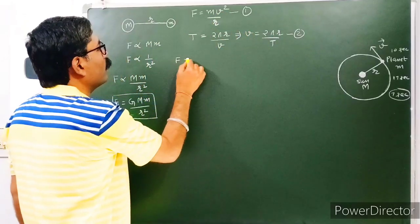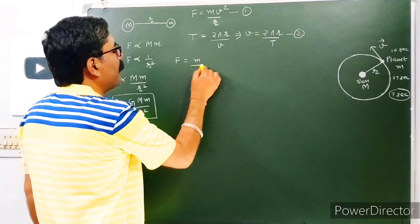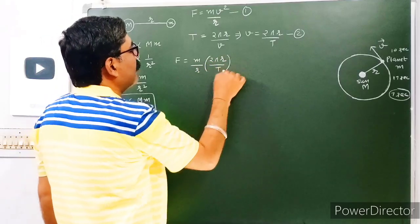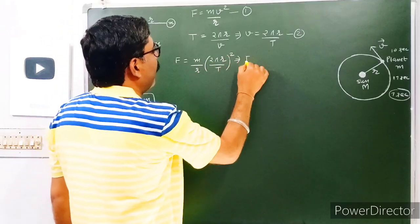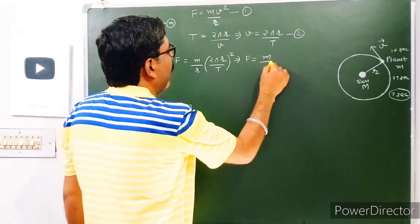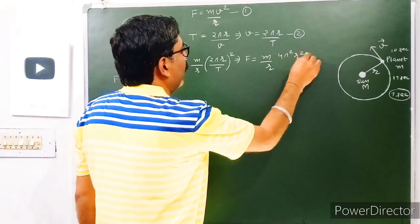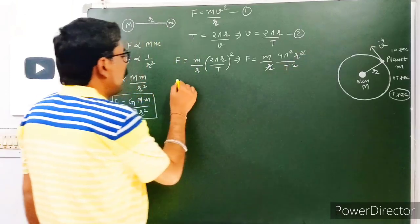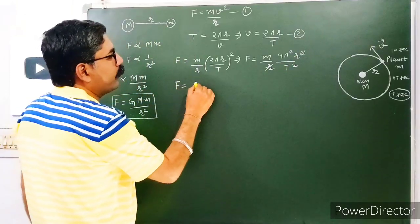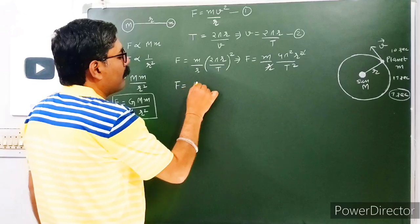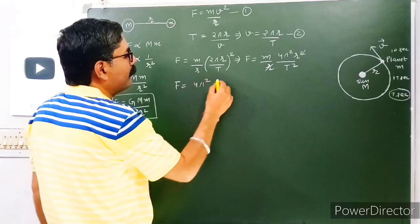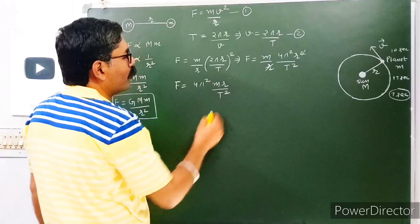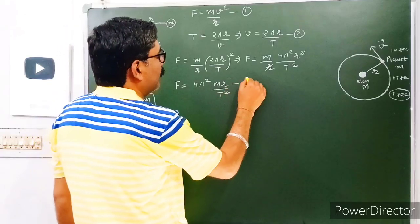So F will be equal to m/r × (2πr/T)². Let us solve this: F = m/r × 4π²r²/T², so we are left with F = 4π²mr/T². Let us mark this as equation number 3.